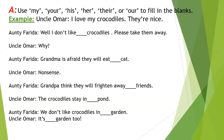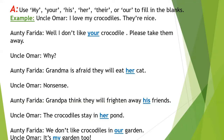Now look at the answers on the next slide. Uncle Umar: 'I love my crocodiles, they are nice.' Auntie Frida: 'Well, I don't like your crocodiles, please take them away.' Uncle Umar: 'Why?' Auntie Frida: 'Grandma is afraid they will eat her cat.' Nonsense! Auntie Frida: 'Grandpa thinks they will frighten away his friends.' Uncle Umar: 'The crocodiles stay in her pond.' Auntie Frida: 'We don't like crocodiles in our garden.' Uncle Umar: 'It's my garden too.'